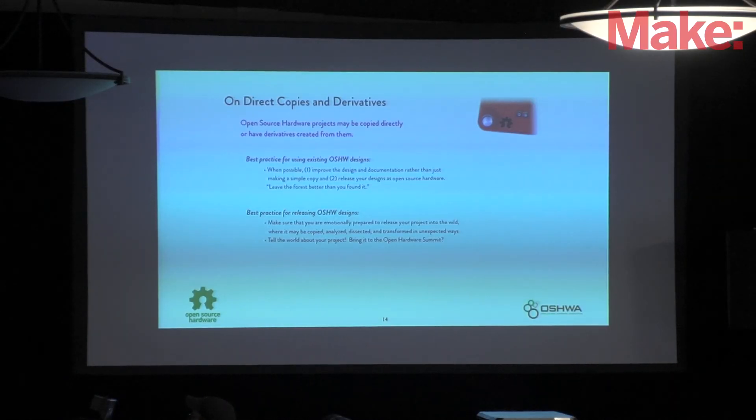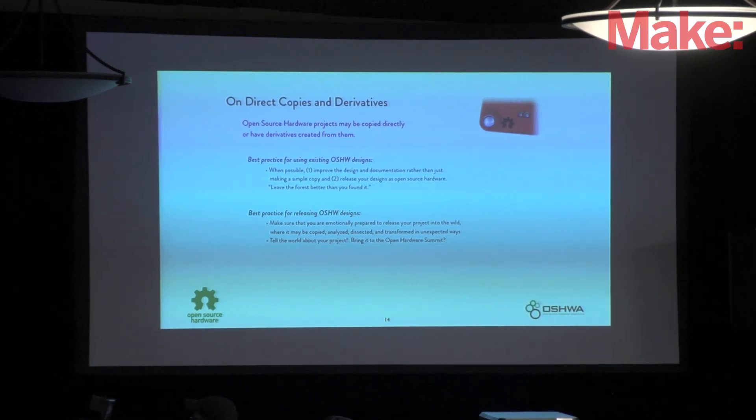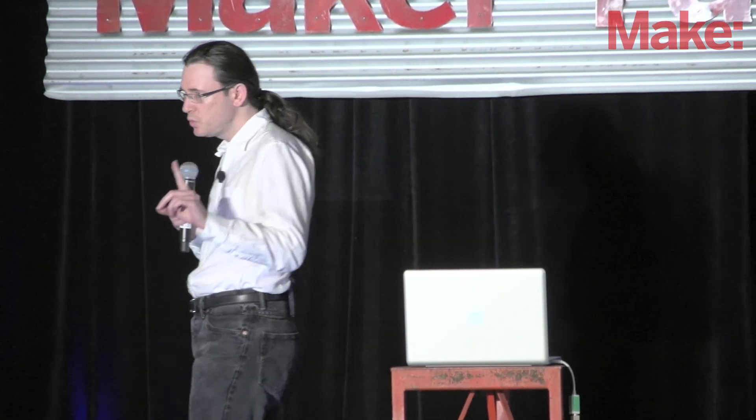Finally, open source hardware projects can be copied directly or have derivatives created from them. When you're using an existing open source hardware design, the best practice is to improve the design and re-release your changes — sort of like going camping and leaving the forest better than you found it. When you're releasing open source hardware designs, make sure you are emotionally prepared to let your project out into the world where it will be analyzed, dissected, copied, sold, and modified. And then tell the world about it — a great way to do that is to bring it to the Open Hardware Summit.